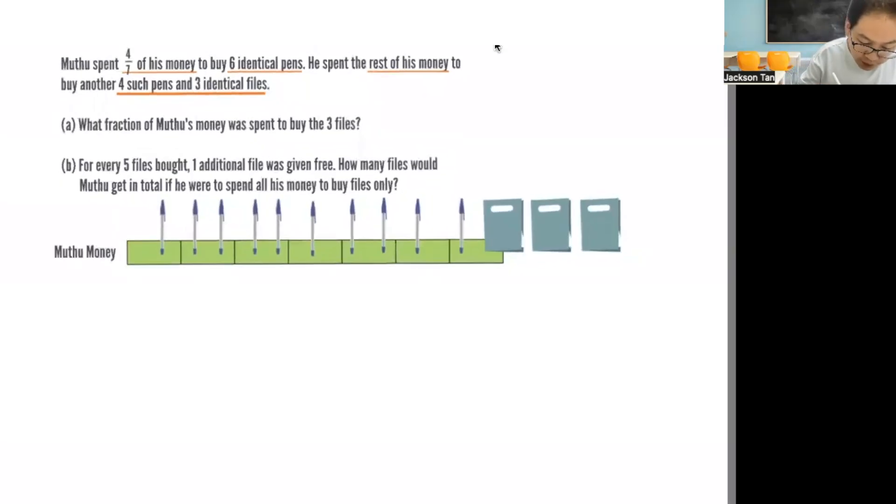So six pens is four-sevenths of Muthu's money. One pen will be four out of seven divided by six, and that will give you two out of twenty-one.